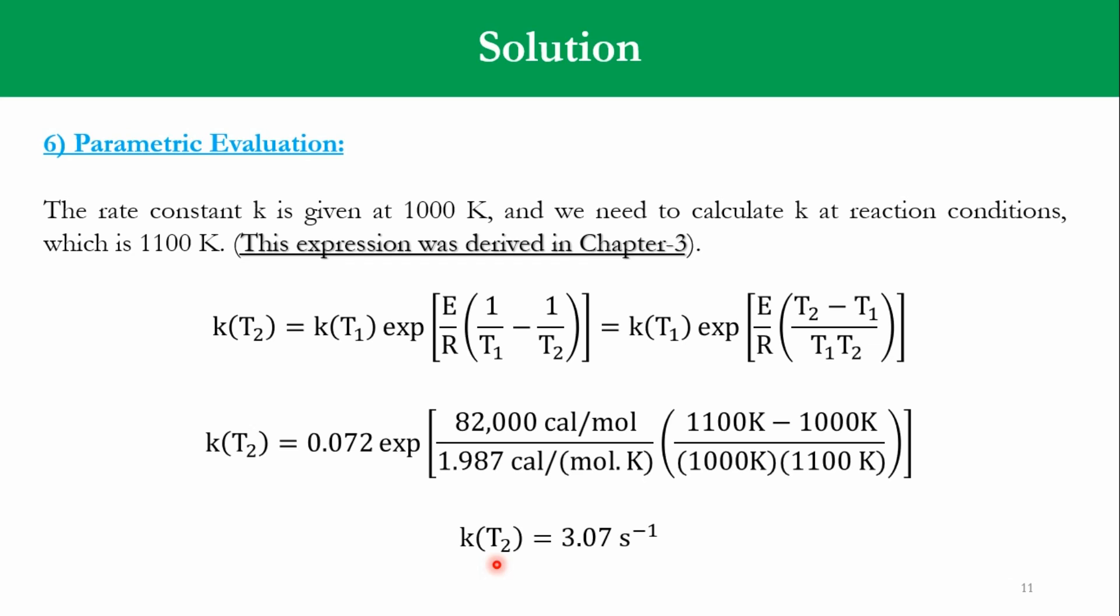So, accordingly, K at T2, which is 1100 in our case, is 3.07. So, we have to use this value to calculate the volume. If we use 0.72, the answer will be wrong, because this value is at some other temperature, which is not equal to the system's temperature. So, this is an important part.